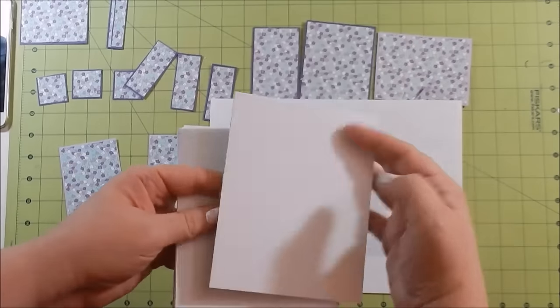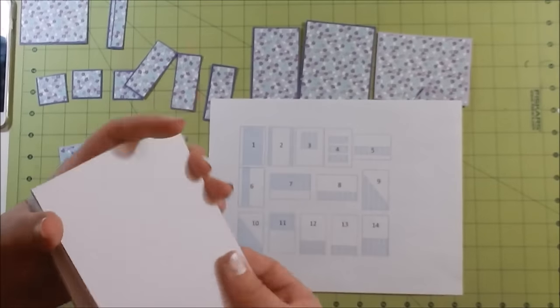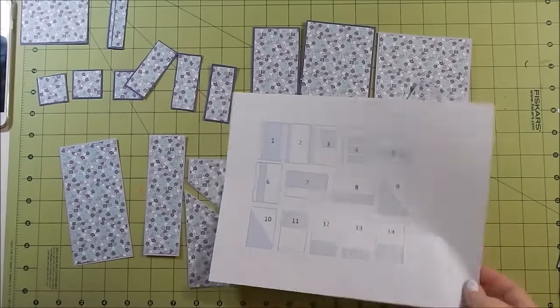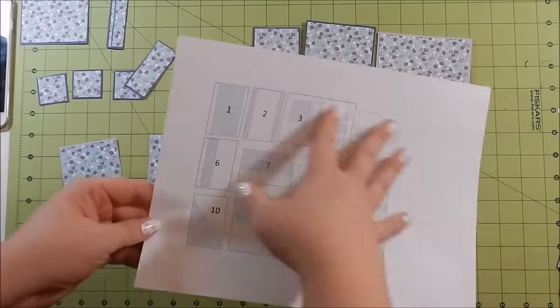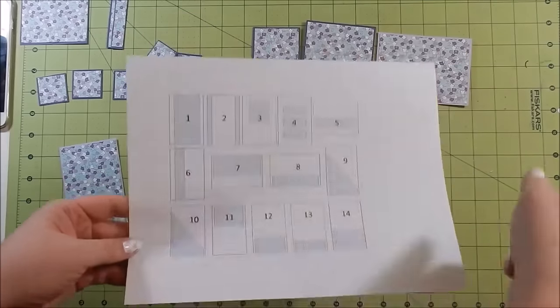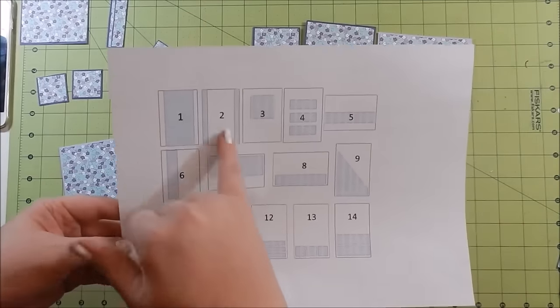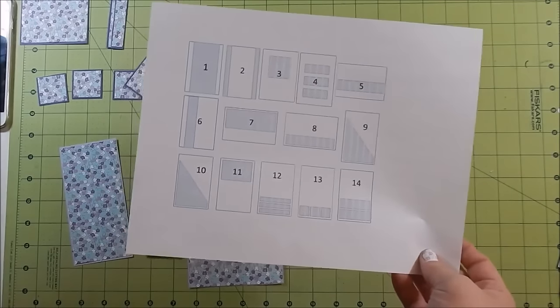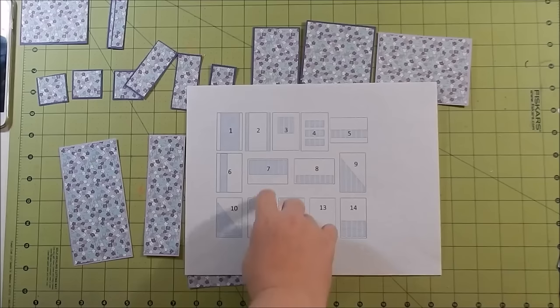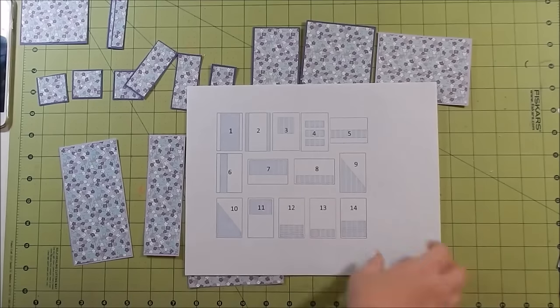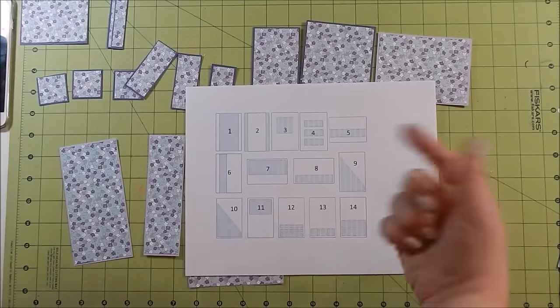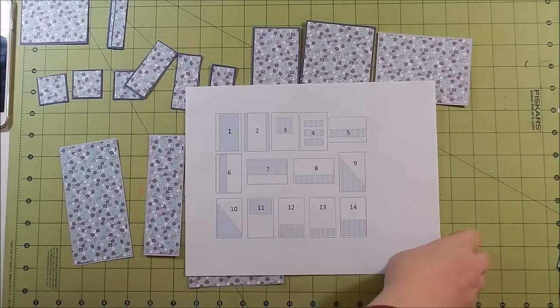What I'm going to do is I have already cut and scored my card bases, so there's 14 here and they are all top folding cards. Of course you can make them whatever you want. So there's 14 here, so I'm going to go ahead and use this as my guide and adhere all my pieces to my card bases. Now I'm going to add some embellishments, washi tape, stuff like that if I see fit, but this is what I'm going to be using. I'm going to speed it up but I'm going to do voiceover so I explain.